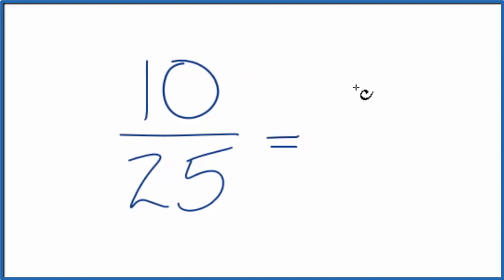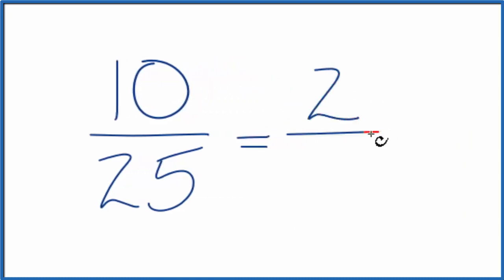Let's divide 10 by 5. That gives us 2, and if we divide 25 by 5, we get 5. So when we reduce or simplify 10/25ths, we get 2/5ths, and we can't simplify or reduce this any further.